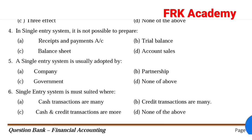Fifth question: A single entry system is usually adopted by. Option B: partnership. Answer: Option B, partnership. A single entry system is usually adopted by partnerships and small traders.